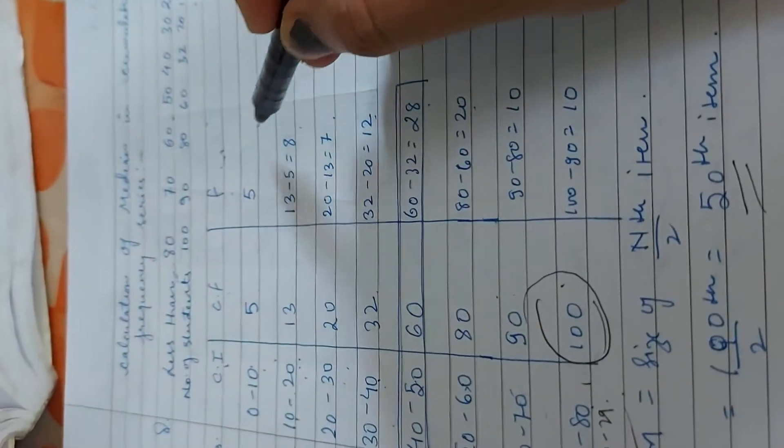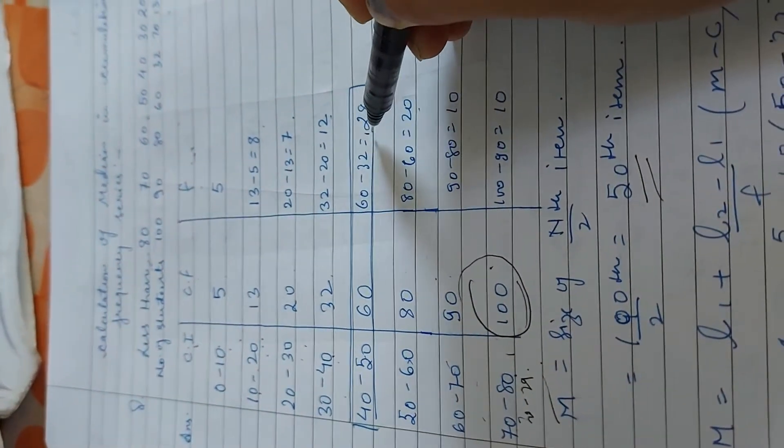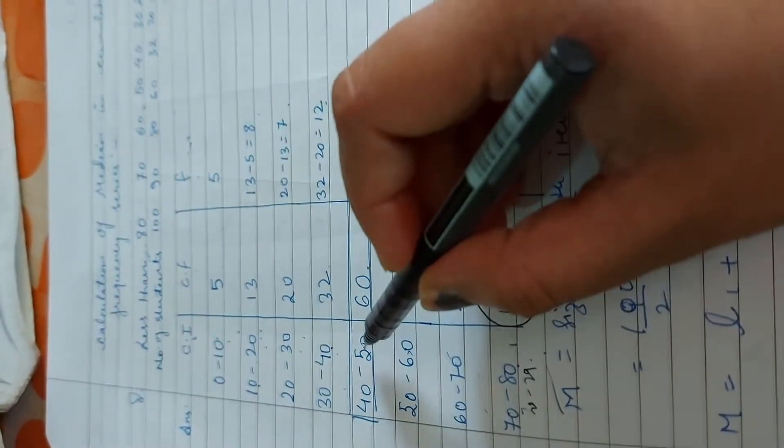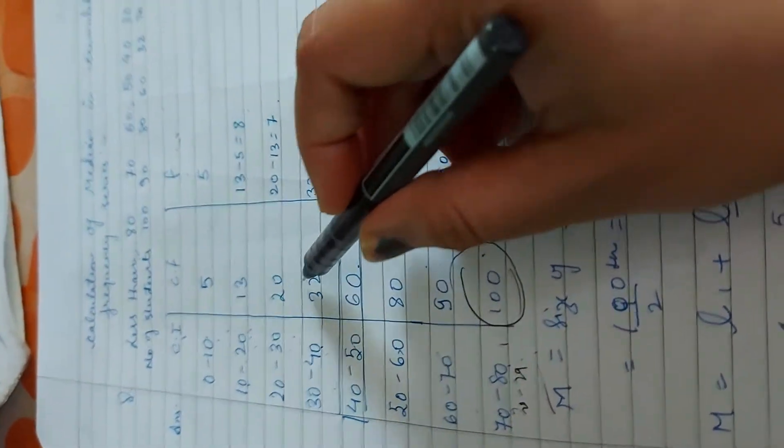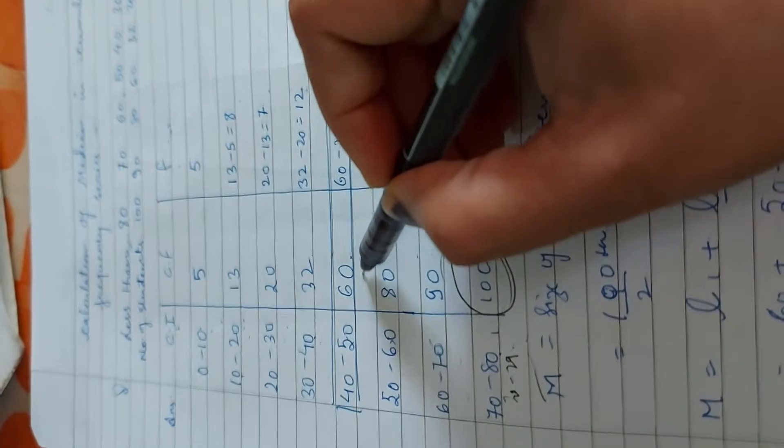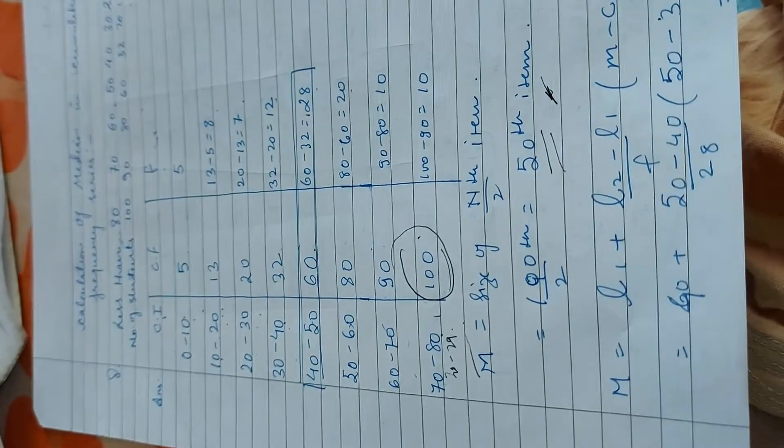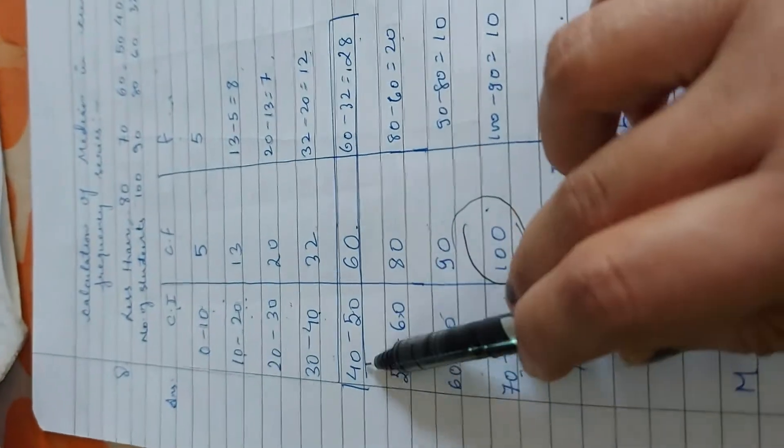So we have to see that here we are going to see that this is 50. Here we are going to see that this is 60. Means our cumulative frequency, we have to check that which class interval we will choose.